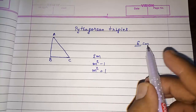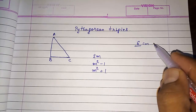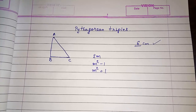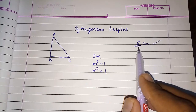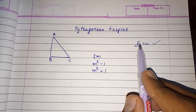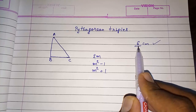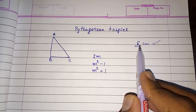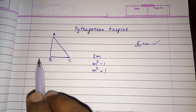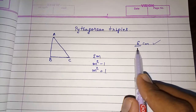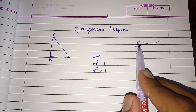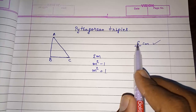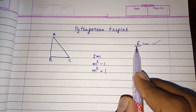Suppose out of these three sides, one side is given as six — we can find the other two sides. But keep in mind that the given number should be either an even number, or it should be one more than a perfect square or one less than a perfect square.